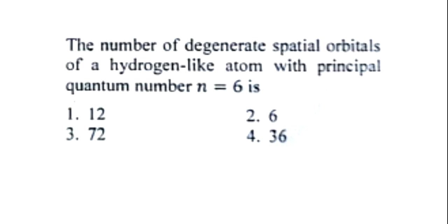Whenever the number of degenerate spatial orbitals is asked and the principal quantum number is given, it is simply n squared — that is 6 squared, which is 36. That is the answer. If you just want the answer, it is 36. If you want to know why it is n squared, you can continue watching this video.